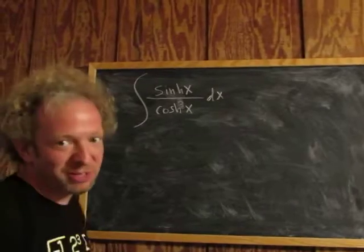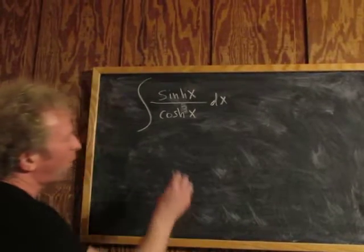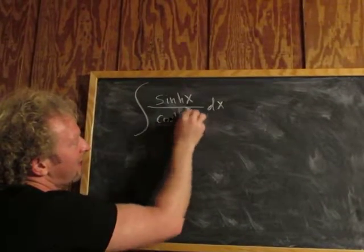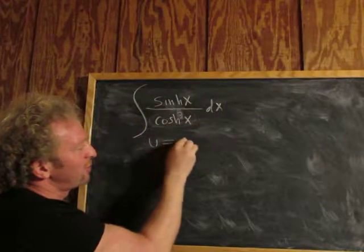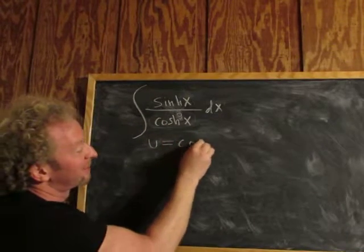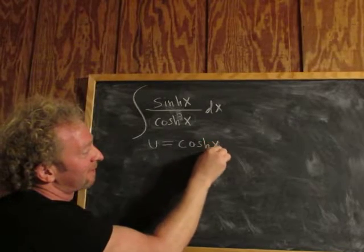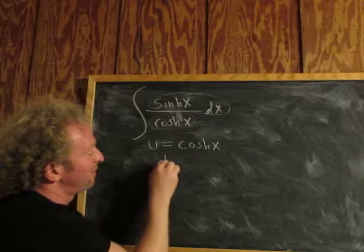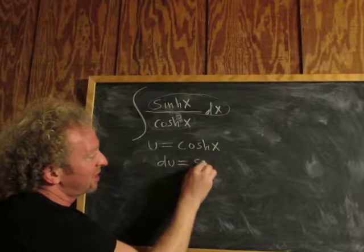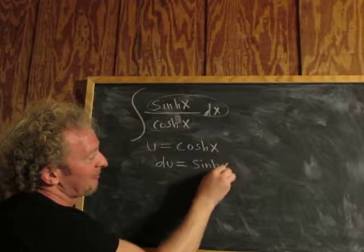We'll start by making a u substitution. Why? Well, we have this hyperbolic cosine, and it's being raised to the third power. So if we let u be equal to the hyperbolic cosine of x, then du is going to be this piece here. It works out perfectly. So du is equal to sinh x dx.